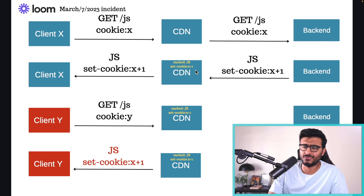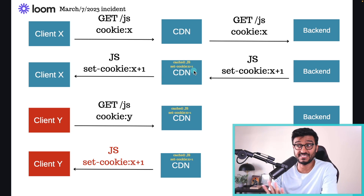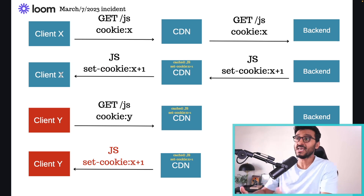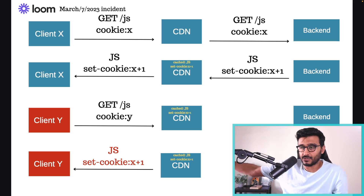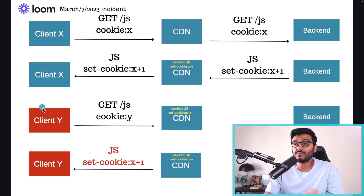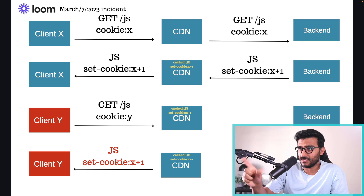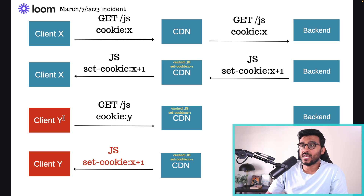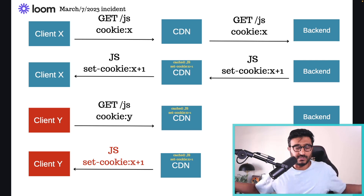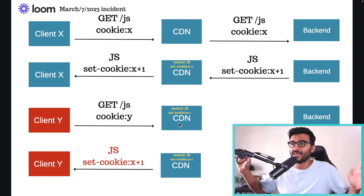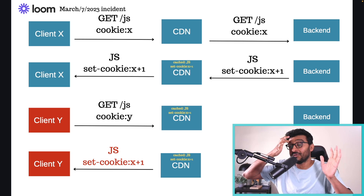The CDN was never supposed to cache the Set-Cookie header for Client X. The problem is it is caching it, and when it responds to Client X it's supposed to set cookie X+1. But if Client Y makes a request to the same JS resource within that same one-second cache window, Client Y sends its own cookie — cookie Y — because it's a different user.